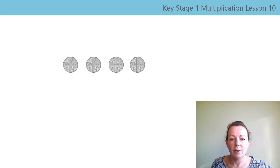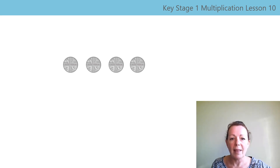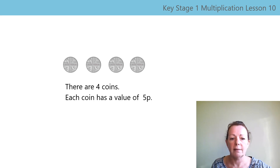Your turn. What is the value of this set of coins? Remember, I say five-pennies, but I think five one-pennies. Pause the video while you work it out. That's right, it's twenty-p. Let's say the same sentences together: there are four coins, each coin has a value of five-p, this is twenty-p. Well done.